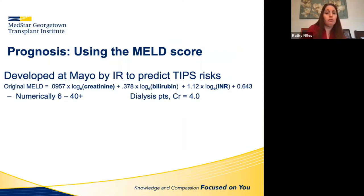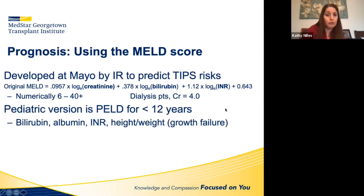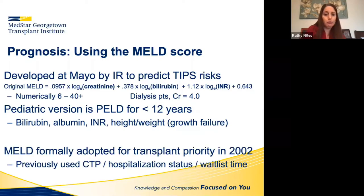We then switched to the MELD score, developed at Mayo — originally by IR to predict risk and mortality of TIPS. You don't need to know the formula, but just the components: creatinine, bilirubin, and INR, with INR most heavily weighted, followed by creatinine, then bilirubin. It ranges numerically from 6 to 40 — all of us with healthy livers have a MELD of 6. Patients on dialysis are assigned a creatinine of 4. There's a pediatric version called PELD that also accounts for growth failure. MELD was formally adopted for transplant prioritization in 2002.